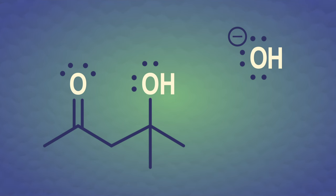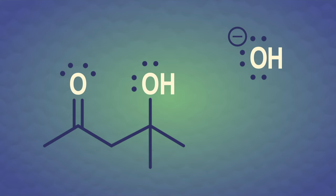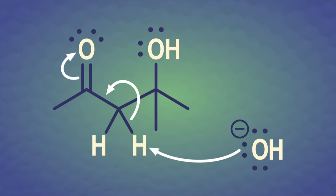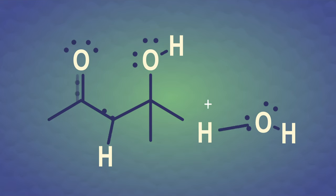But we're not quite done. At this point, the aldol product will often undergo dehydration. And remember, this is a base-catalyzed reaction, which means the base is reformed at the end. This dehydration is a little tricky, so let's look at it carefully. To start, the base nabs one of the alpha-hydrogens in between the carbonyl and alcohol groups, and we form an enolate again. But now it's the enolate of the aldol product.